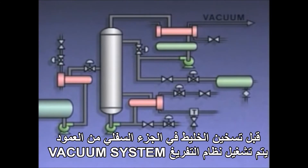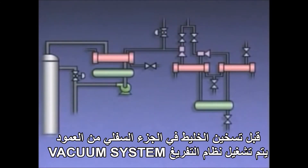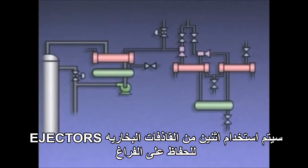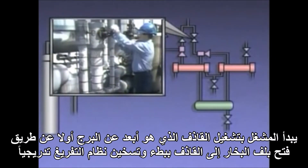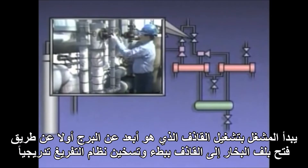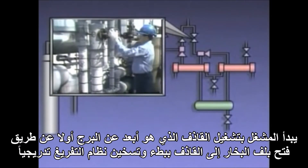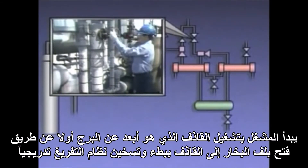Next, before the mixture in the bottom of the column is heated, the vacuum system is started up. In this system, two steam jets are used to maintain the vacuum. The operator starts the jet that's farther from the column first by slowly opening a valve, which admits steam to the jet and gradually warms the vacuum system.